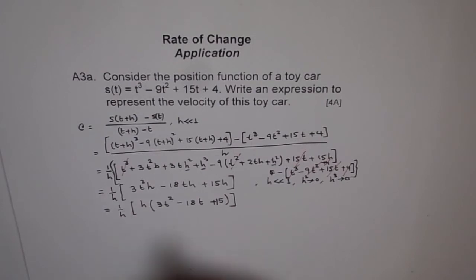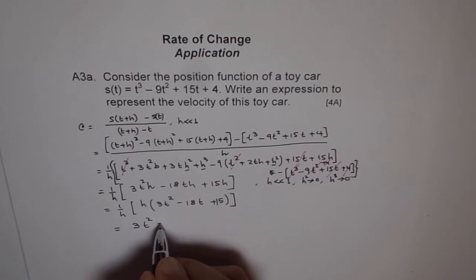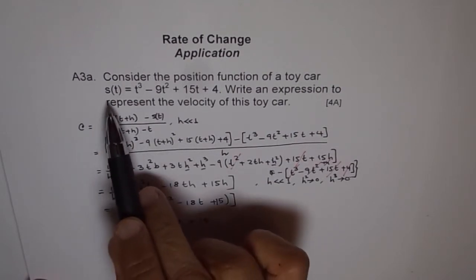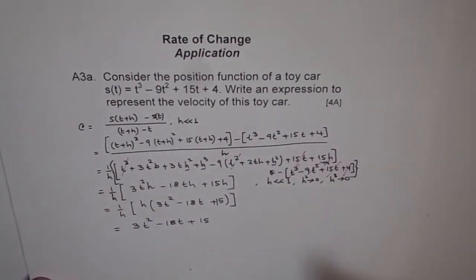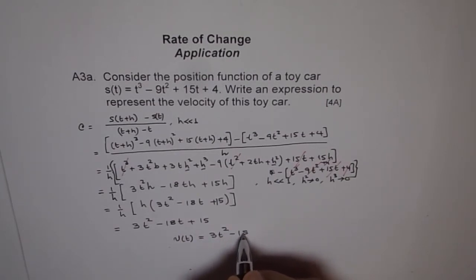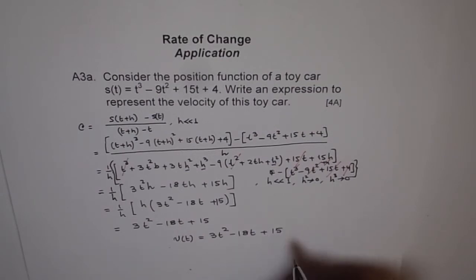So we got h(3t² - 18t + 15). Now I can cancel h and h. So I'm left with 3t² - 18t + 15. So that is the instantaneous rate of change of position. So that is an expression for the velocity. We say v(t) = 3t² - 18t + 15. So that is our expression for velocity.